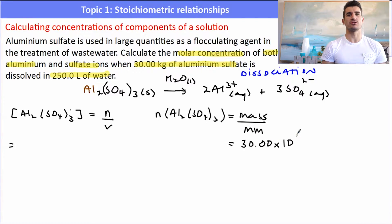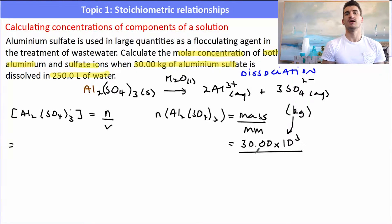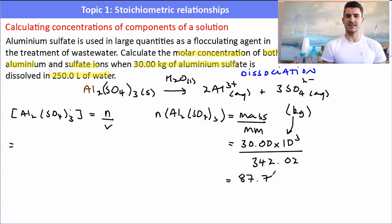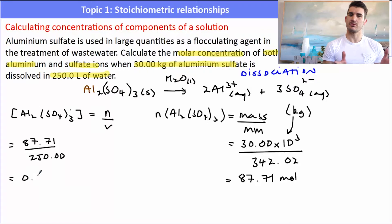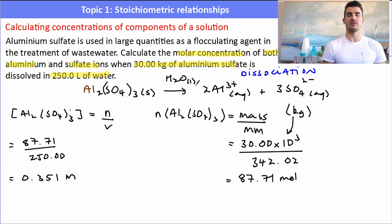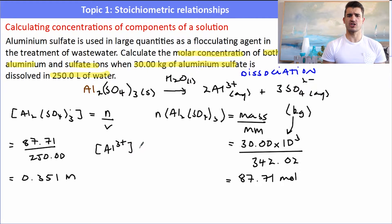We were given 30 kilograms, so we need to change that to grams — multiply by 1000. Then we divide by the molar mass of Aluminium Sulfate, which is 342.02, giving us 87.71 moles — a large amount, but that's okay because it was 30 kilograms. Now we can calculate the concentration of the Aluminium Sulfate: divide the number of moles by the volume of solution in decimetres cubed, which is 250, giving a concentration of 0.351 mol dm⁻³.